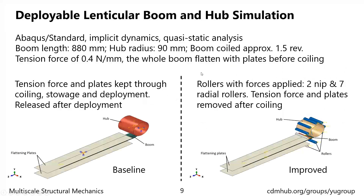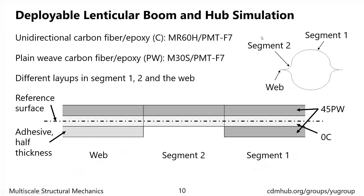Now we can look into the simulation of deployable boom structures. Due to the complexity of these structures, we have to apply some simplifications to help avoid convergence issues. For example, we apply a tension force at the free end of the boom, and the whole boom is flattened by two flattening plates before coiling. Different from the CBT simulation, here we use implicit dynamic steps with quasi-static analysis. We have developed two models: a baseline model where the tension force and the flattening plates are kept until deployment is finished, and an improved model closer to the real structure, adding rollers around the hub so that the tension force and the flattening plates can be removed after coiling. The cross-section of the boom consists of two shells bonded together along the webs, with different layouts in different segments, including plus-minus 45-degree plain weave and zero-degree unidirectional plies, and an adhesive layer at the webs for bonding the shells.